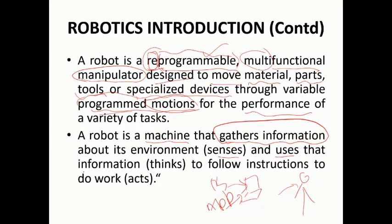Using the sensors, the robot can collect observations. Those observations become information for the robot to think about the environment, to follow instructions coded in the program, and to decide what action to take.